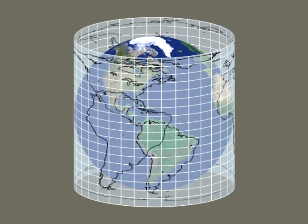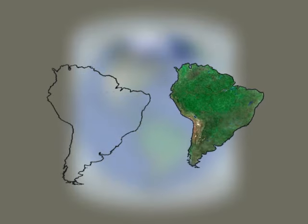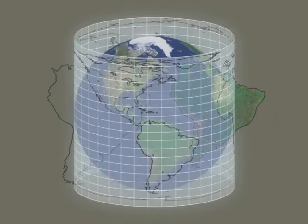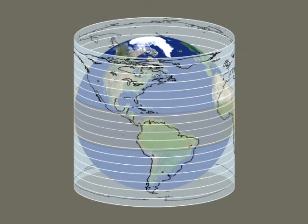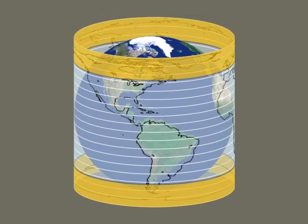The continents, on the other hand, are distorted by the projection. Although the representation of the intertropical zone is close to reality, the polar regions are broadened disproportionately.